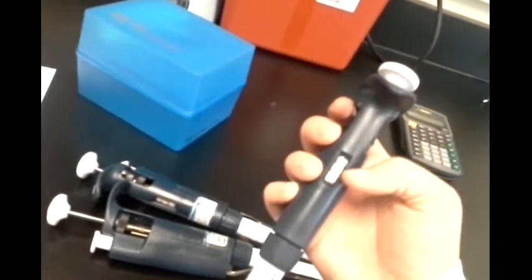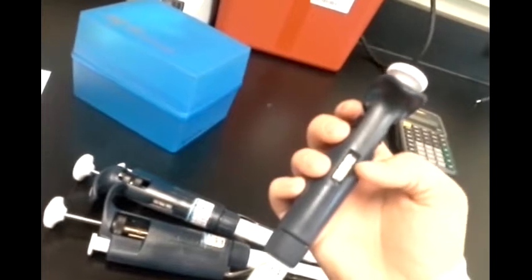1,000 microliters is 1 milliliter. This little display here goes up to 100, but it really stands for 1,000. So when I turn it to 25, it's really 250.